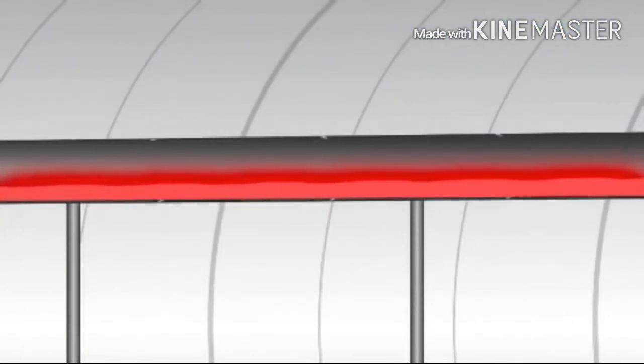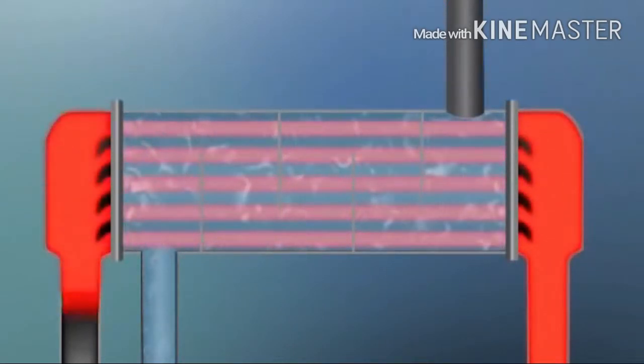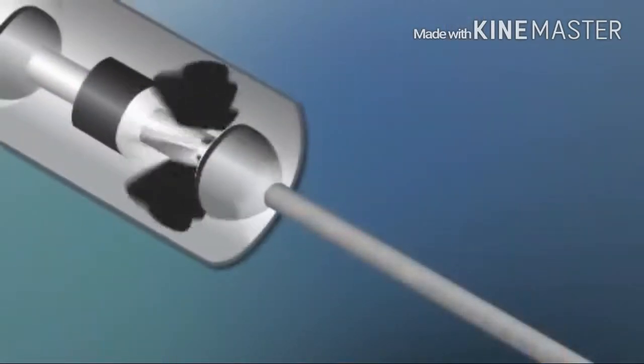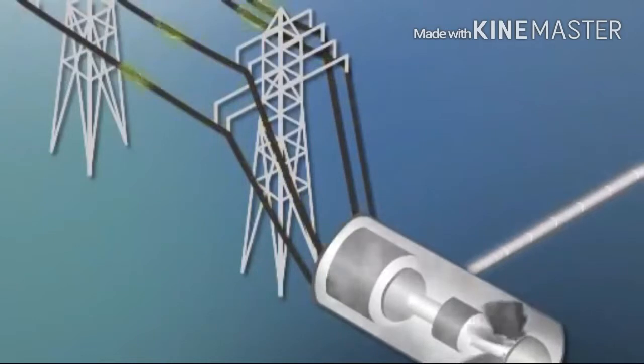Basically, this super hot liquid heats water in this thing called a heat exchanger, and the water turns to steam. The steam is sent off to a turbine, and from there, it's business as usual inside a power plant. A steam turbine spins a generator, and the generator makes electricity.